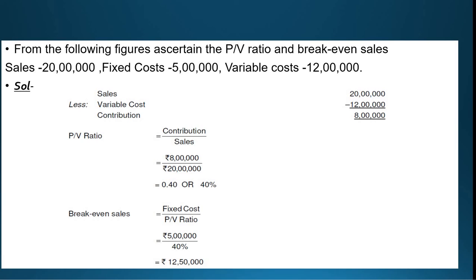Next, we calculate break-even sales. The formula is: BEP = Fixed Cost divided by PV Ratio. Fixed cost given is Rs. 5,00,000, divided by PV Ratio of 40% (or 0.40 — note: do not use just 40 without the percentage sign, as that would be wrong). So, 5,00,000 divided by 40% equals Rs. 12,50,000. That is the break-even sales.